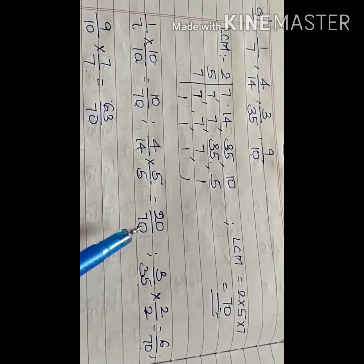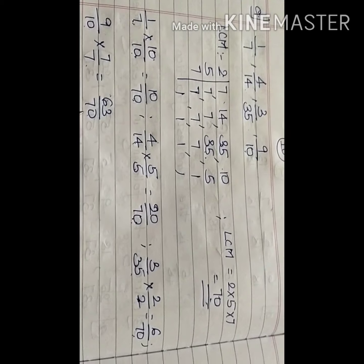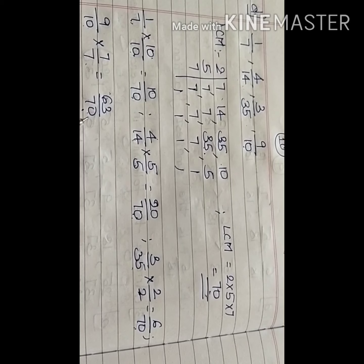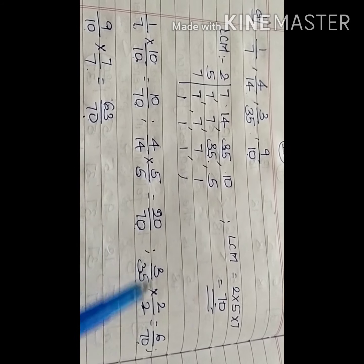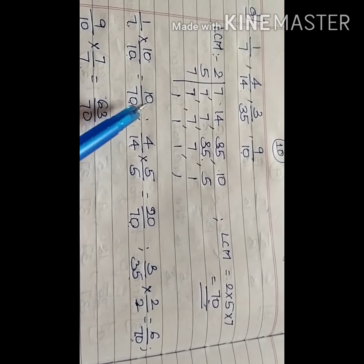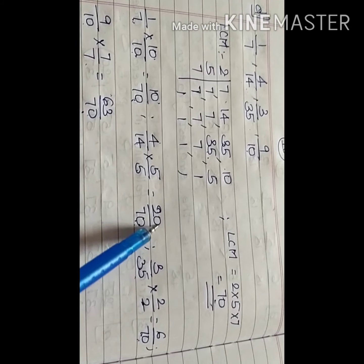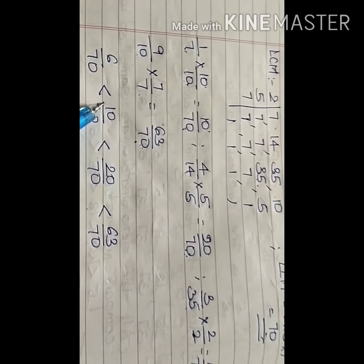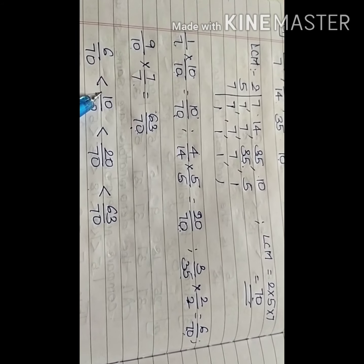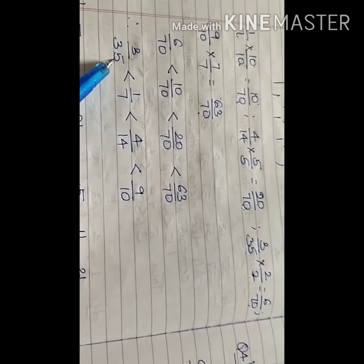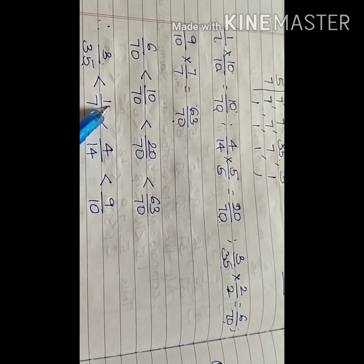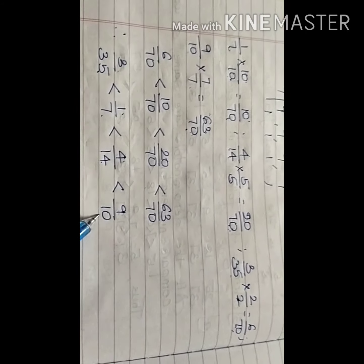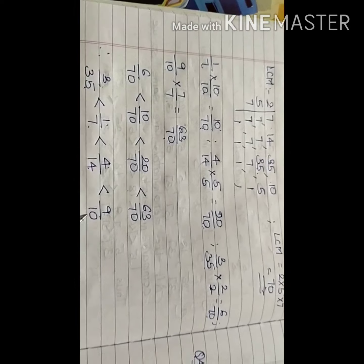Now all four fractions are like fractions. Arranging by the numerators in ascending order: 6 upon 70, then 10 upon 70, then 20 upon 70, then 63 upon 70. Going back to original fractions: 6 upon 70 is 3 upon 35 — the smallest — then 1 upon 7, then 4 upon 14, and finally 9 upon 10.